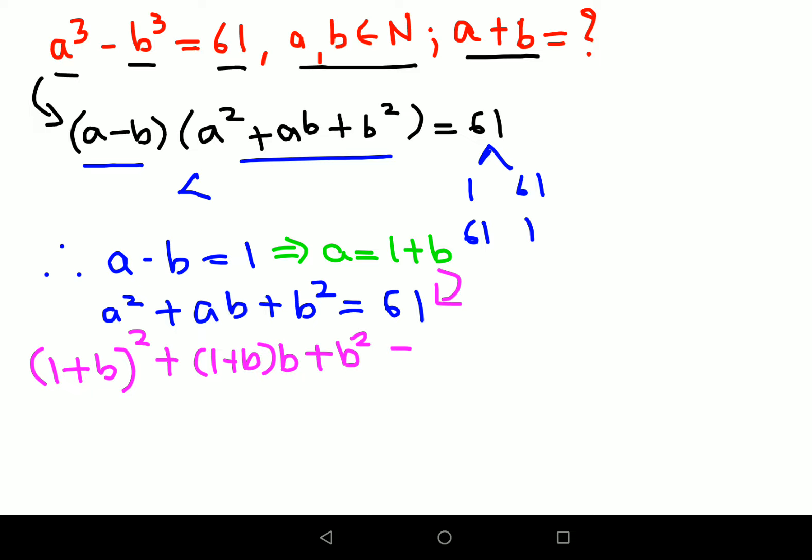Now using the expansion of a plus b the whole square, I will get 1 plus 2b plus b square, and multiplying b with this entire bracket I get b plus b square, and this plus b square is left. So that also we will get added.